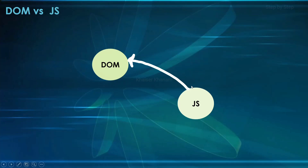In our previous session we saw that JavaScript is independent of the DOM, which is why JavaScript can be written outside the browser — inside servers. But most of the time we use JavaScript to access HTML documents so we can edit the content present in our web page. I hope you are clear with this. Let me summarize what we have covered.